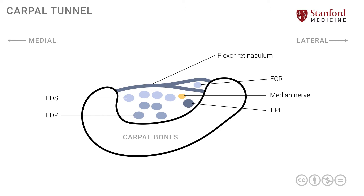There are a couple of other structures to complete this picture. The ulnar nerve is situated more on the medial side, and note that it is not in the carpal tunnel — it is actually outside the carpal tunnel — accompanied by the ulnar artery, which is also on the outside of the carpal tunnel. So if a patient presents with ulnar nerve symptoms, that does not necessarily support a diagnosis of carpal tunnel syndrome.